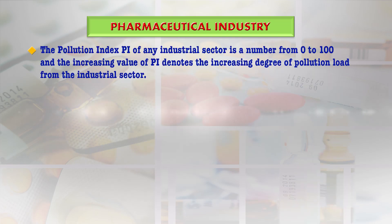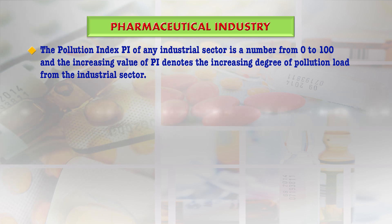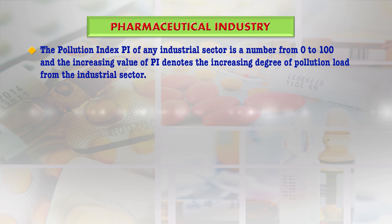The Pollution Index, or PI, of any industrial sector is given a number from 0 to 100. An increasing value of PI represents an increasing degree of pollution load from that particular industrial sector.